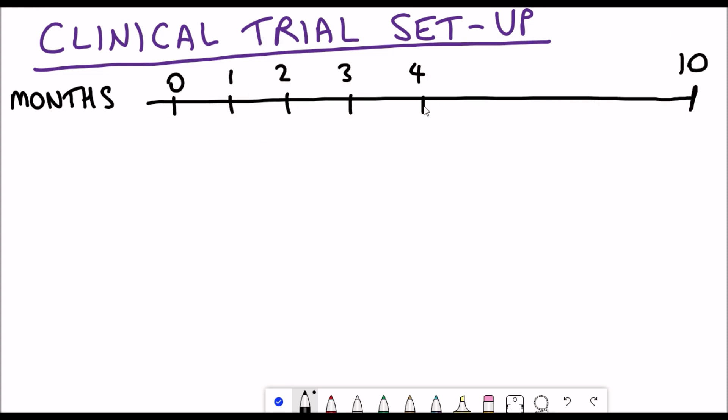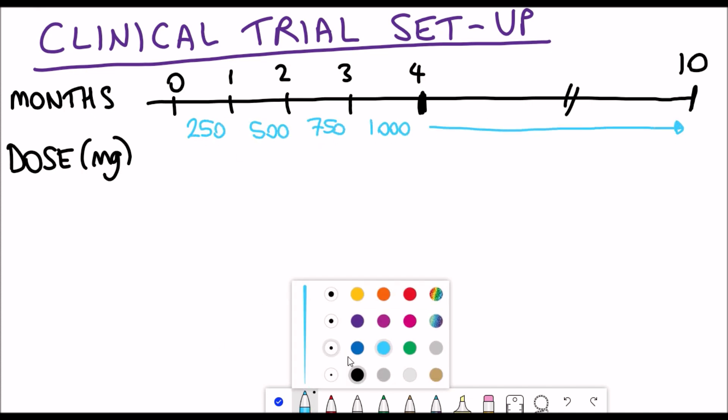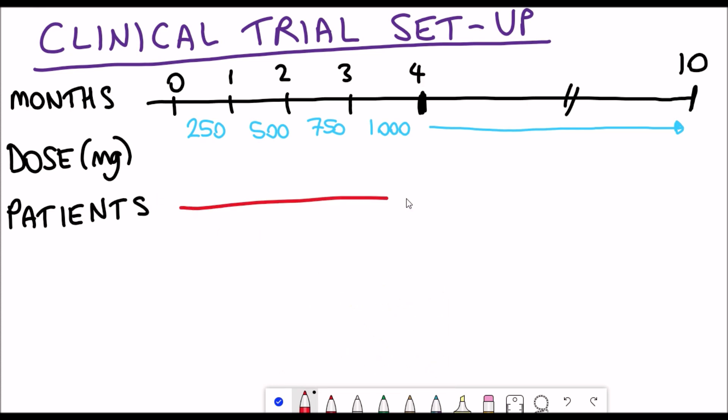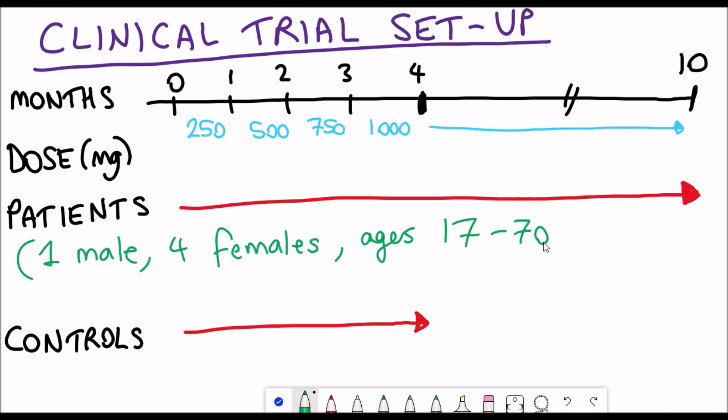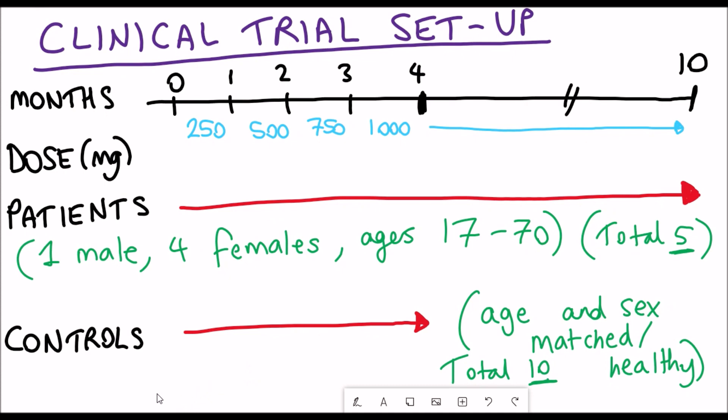The setup of this clinical trial was between four and ten months for the patients and the controls and they increased the dose throughout the time. For the patients they did it for ten months and the controls only for four months. For the patients there was five of them, one male and four females aged between 17 and 70 and for the controls they were age and sex matched and they were healthy.